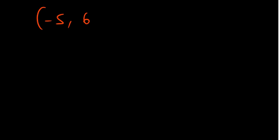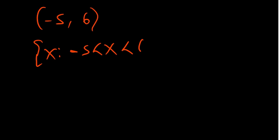Now go ahead and write (−5, 6) in set builder notation. The answer is: x such that −5 < x < 6, and x is a member of real numbers. Both endpoints are not included, so we use strict inequalities.